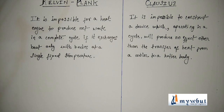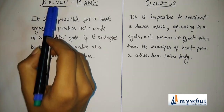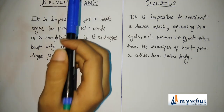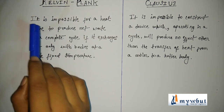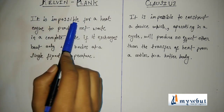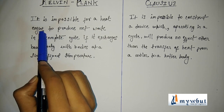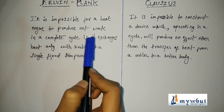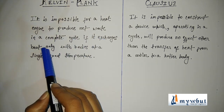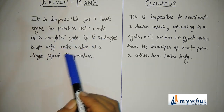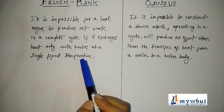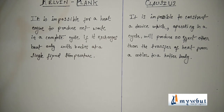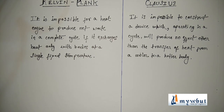Let us first understand the definitions of these statements. These definitions are very important, so you may note them down. The Kelvin-Planck statement states that it is impossible for a heat engine to produce net work in a complete cycle if it exchanges heat only with bodies at a single fixed temperature.